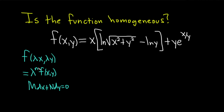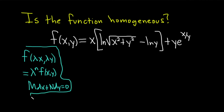We'll also find the degree. All we have to do is replace x with lambda x and y with lambda y. This is one that is a lot harder than what you would actually see in a differential equations class — it just looks very different. So let's go ahead and replace x with lambda x and y with lambda y.